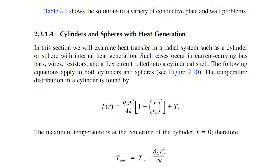Internal heat generation occurs in current-carrying bus bars, wires, resistors, and flat circuits rolled into a cylindrical shell. For example, you have wires and resistors. If you have a copper conducting wire in concealed wiring inside a building, the copper has a simple PVC coating. When you bring it outside, the same wire can carry a higher current — first because you have convection, and second because it is not looped and confined.